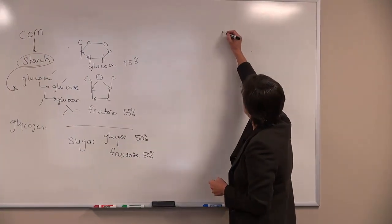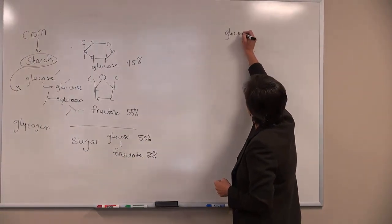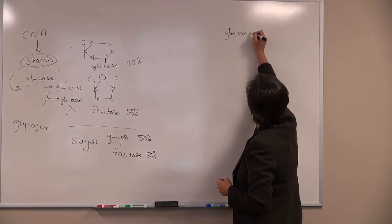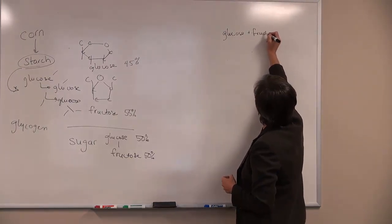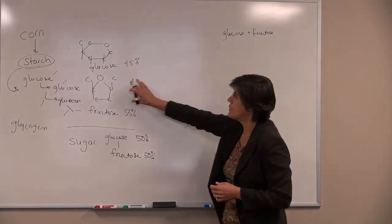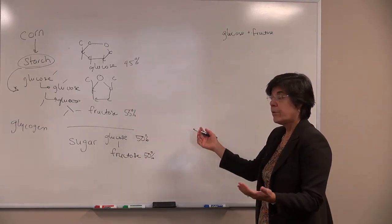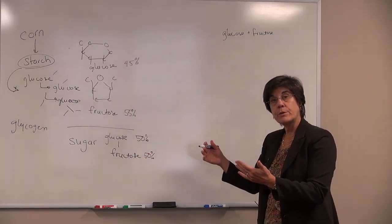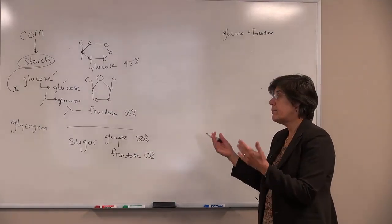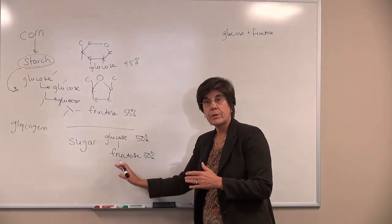When we eat glucose and fructose, no matter whether it's coming from high fructose corn syrup, whether it's coming from sugar, another thing that has fructose and glucose in it would be honey. Honey has about the same amount of glucose and fructose as sugar.